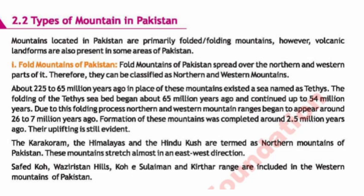About 225 to 65 million years ago, in place of these mountains existed a sea named Tethys - this is an important line. Folding of the Tethys's bed began about 65 million years ago and continued up to 54 million years. Due to this folding process, northern and western mountain ranges began to appear around 26 to 7 million years ago. Formation of these mountains completed around 2.5 million years ago and their uplifting is still evident.